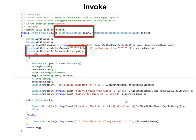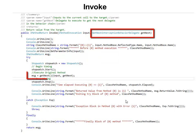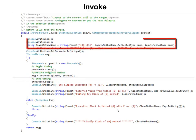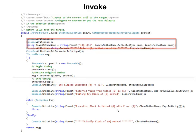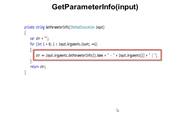IMethodInvocation allows you to get access to the actual parameters that were passed by the client. GetNextInterceptionBehavior delegate is a pointer to the next behavior in the chain — it allows you to execute the next behavior and pass the input parameter to it. I am using reflection to get the name of the method being executed and the name of the interface. I have defined a private method called GetParameterInfo, which loops through all the input parameter data and returns a concatenated string of name-value pairs.